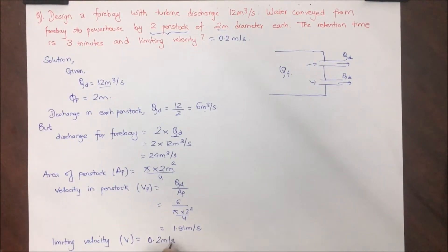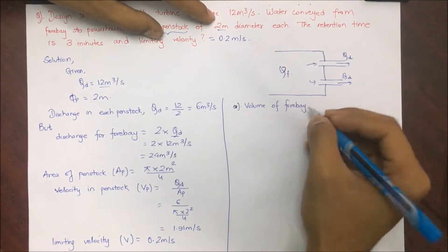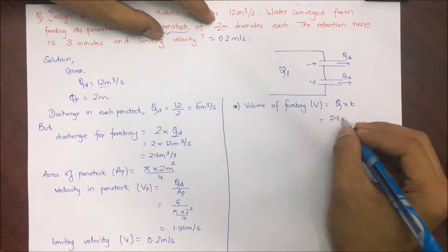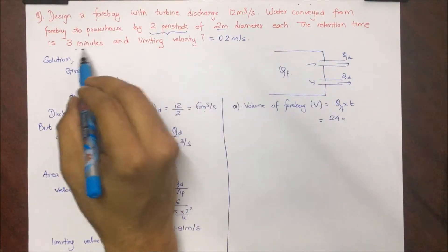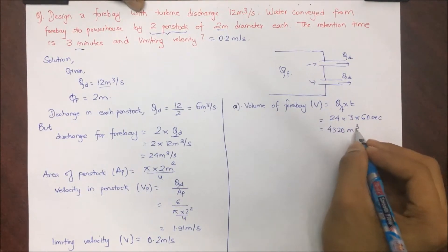Now we calculate the volume of forebay V, that is Qf into t. So 24 into detention time of 3 minutes, converting into seconds, gives us 4320 meter cube. This is the volume of forebay.